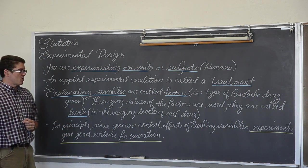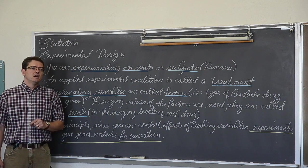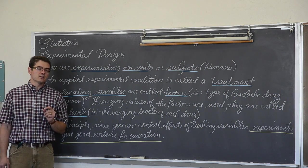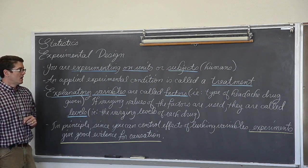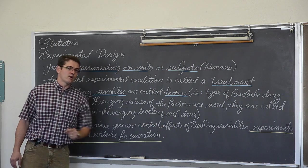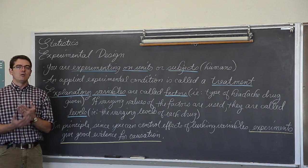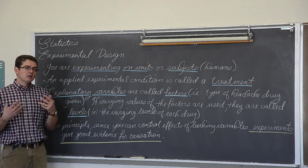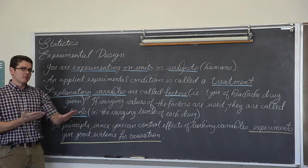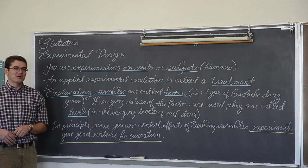In principle, since you can control the effects of lurking variables, experiments give very good evidence for causation. If you cannot set up an experiment, there are five characteristics that you must take a look at to show evidence of causation. But an experimental design with your control over all the lurking variables, that is your simplest way of attempting to prove causation, that one explanatory variable is truly the, maybe not necessarily the only variable, but that is what we try to minimize it down to with Intro to Stats, where that one variable is what is causing the change in the response variable. Okay, first page of the notes. Let's move it on.